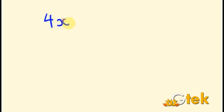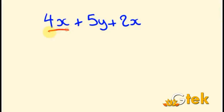We will see more examples to understand algebraic expressions and basic operations in algebra. Taking the expression 4X plus 5Y plus 2X — notice that the X component has been used twice: 4X and 2X. To simplify, we add the X components first: 4X plus 2X is 6X. The Y component appears only once as 5Y, so the simplified result is 6X plus 5Y.